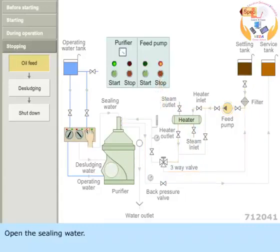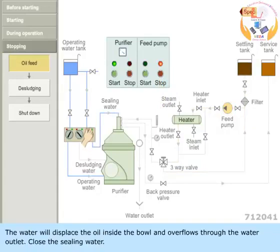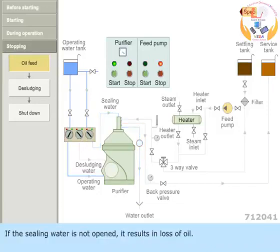Open the sealing water. The water will displace the oil inside the bowl and overflow through the water outlet. Close the sealing water. If the sealing water is not opened, it results in loss of oil.